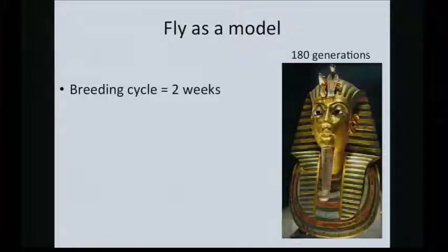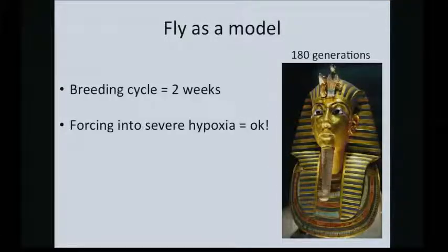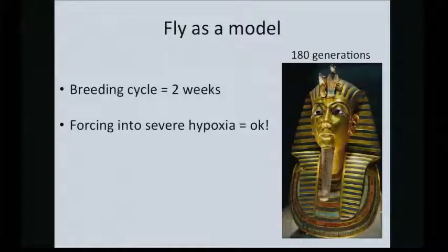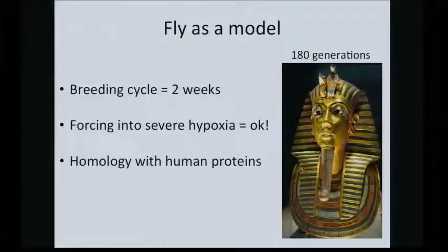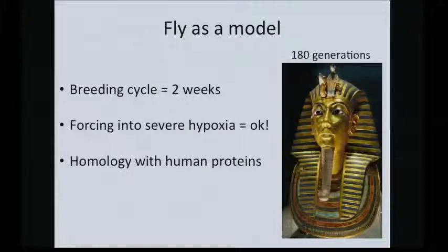Just to say one more thing about the flies: the breeding cycle is about two weeks, so 180 generations — which is where the fly was when they first sequenced it — would take us quite a ways back in human history. Of course, the evolution rates are not the same, so it's not a direct comparison. And the flies, in spite of being very distant, do have homology with human proteins, and the second example will take us to a place where we can actually use some of this information.